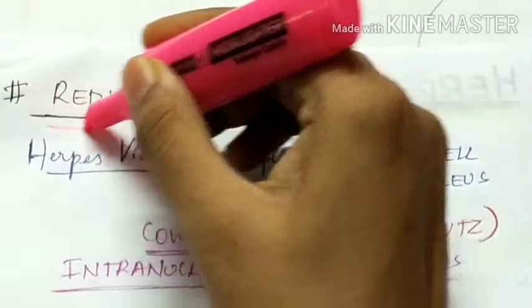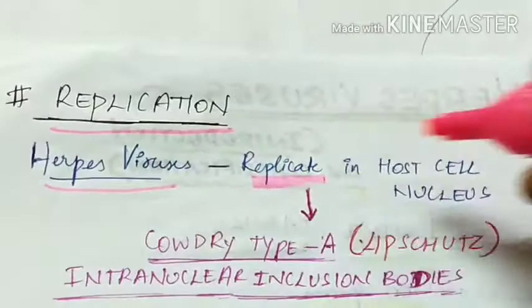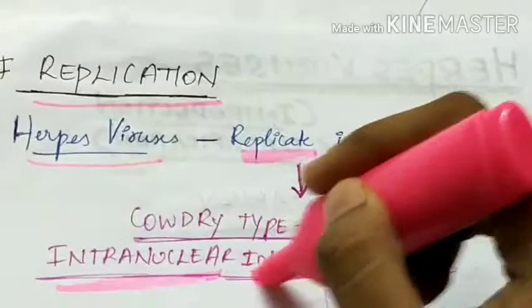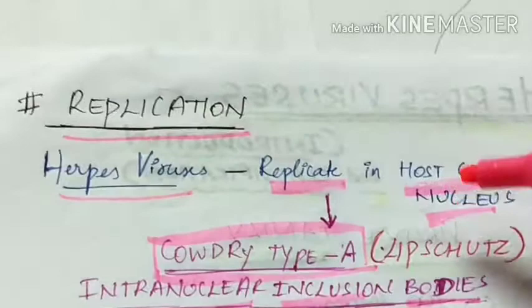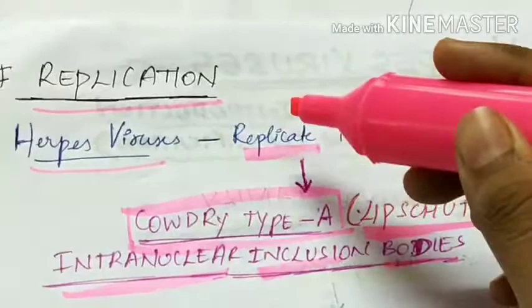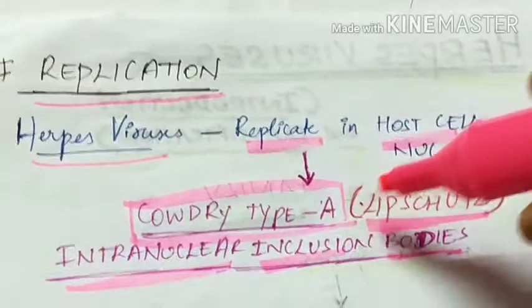Herpes viruses replicate in the host cell nucleus and produce intranuclear inclusion bodies called Cowdery type A inclusion bodies, also known as Lipschitz bodies.